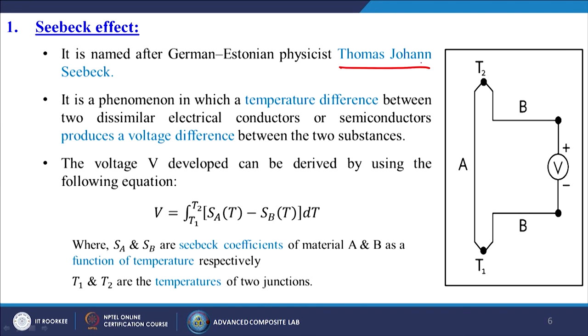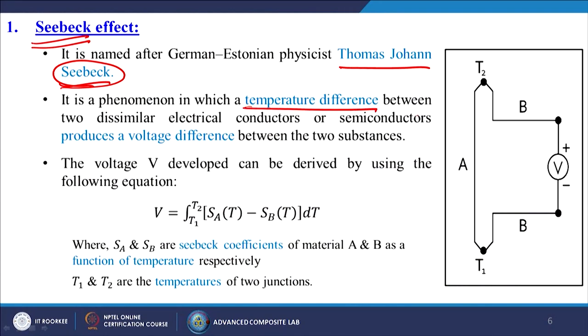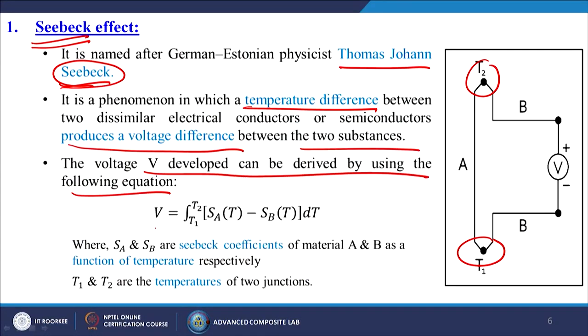The Seebeck effect is named after German-Estonian physicist Thomas Johann Seebeck. It is a phenomenon in which a temperature difference between two dissimilar electrical conductors or semiconductors produces a voltage difference between the two substances. The two materials T1 and T2 are different — not electrically the same — and when we apply heat, the material changes and generates electricity. The voltage V developed is given by V = ∫(T1 to T2) [SA(T) − SB(T)] dT, where SA and SB are the Seebeck coefficients of materials A and B as a function of temperature, and T1 and T2 are the temperatures of the two junctions.